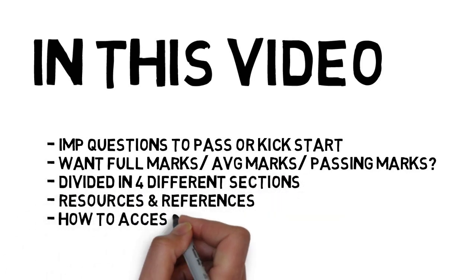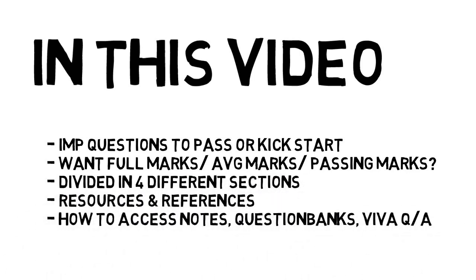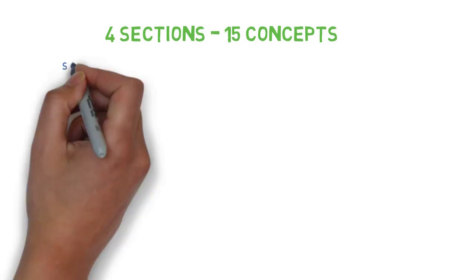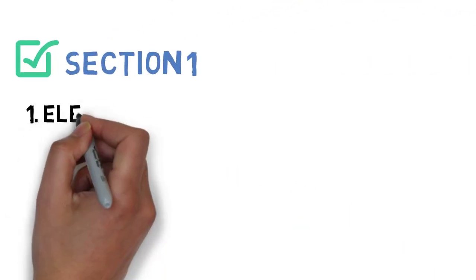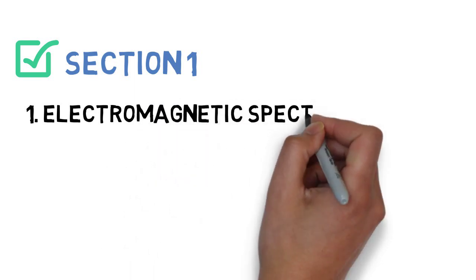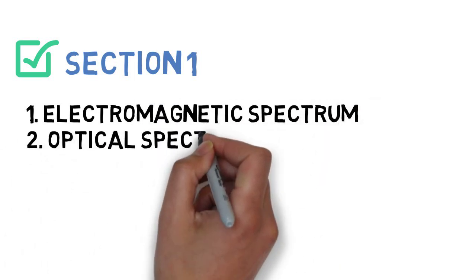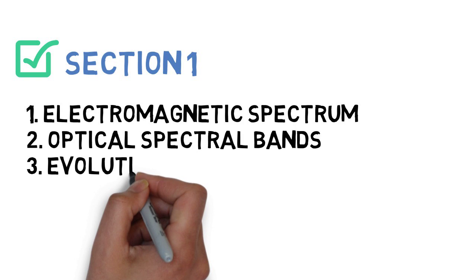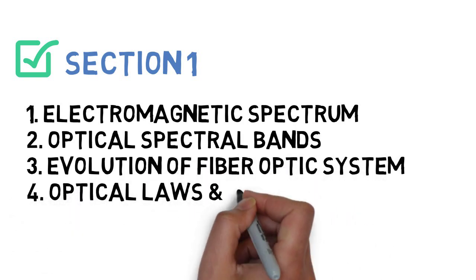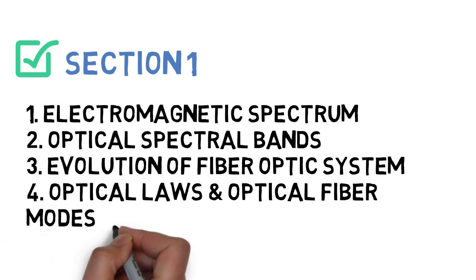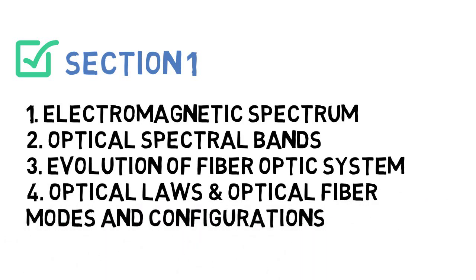Starting with your four sections, we've divided 15 questions into four sections. Section one and section two are very important, so make sure you do these questions well. Talking about section one, the first concept is electromagnetic spectrum, next is optical spectral bands, next is evolution of fiber optic system, and next is optical loss, optical fiber modes and configurations. These are the four concepts for section one.